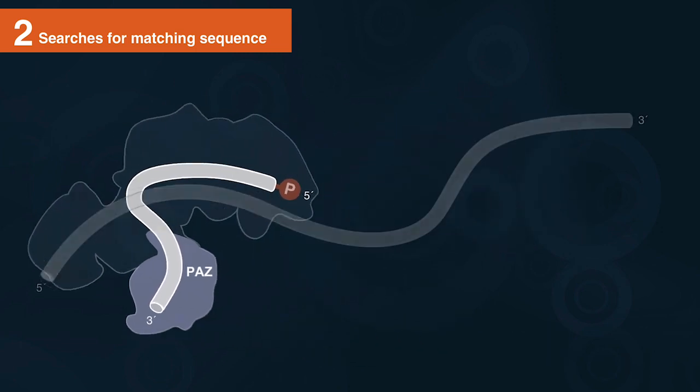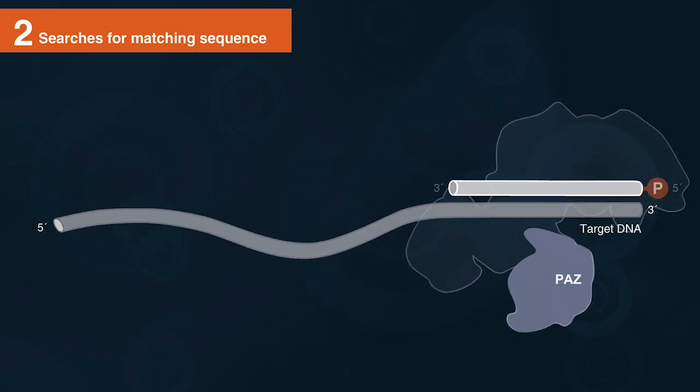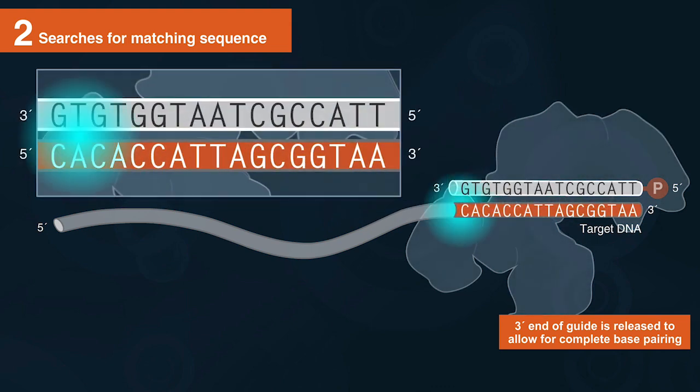The prokaryotic Argonaut guide complex searches for a complementary sequence on the target strand. When a match is found, the 3' end is released to allow for complete base pairing between the guide and substrate.